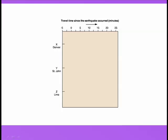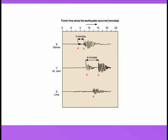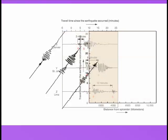Let's look at what happens at three locations at the same time. The earthquake hits Denver first, then St. John, and then Lima. Notice that the gap between the P and the S waves differs because of their location.